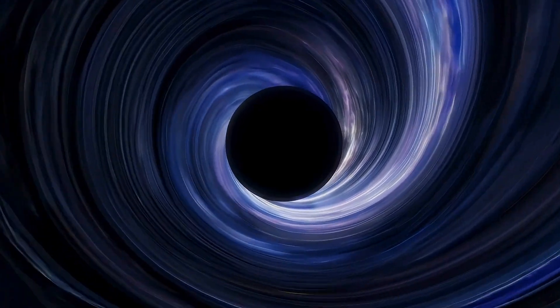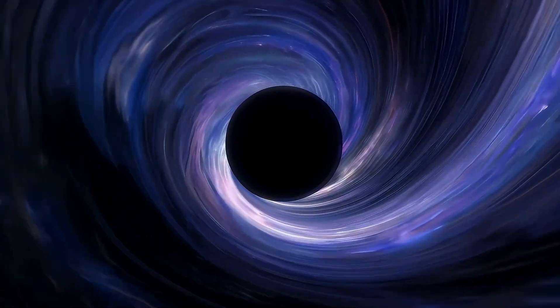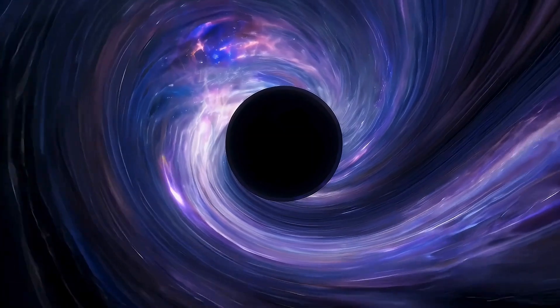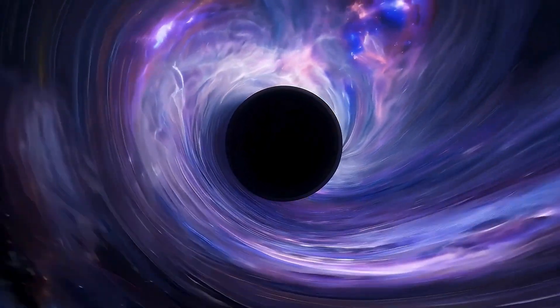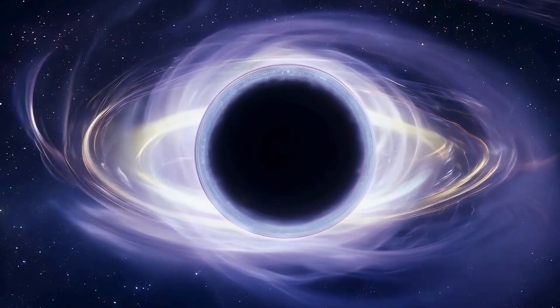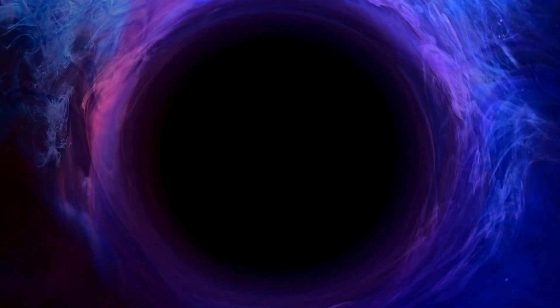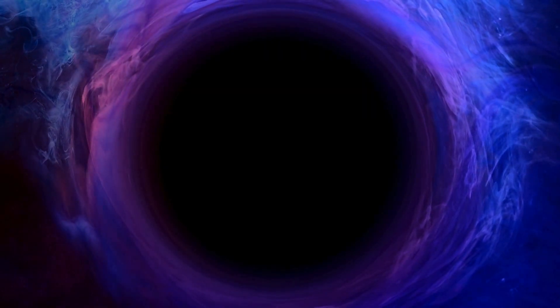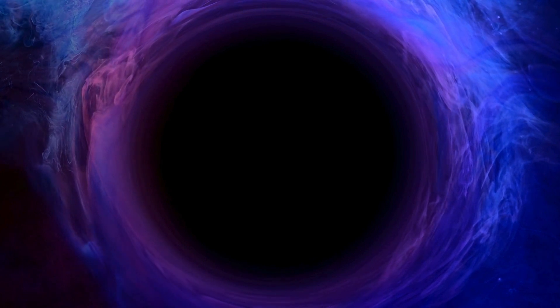One of these is gravitational lensing. Gravitational lensing is a phenomenon predicted by Albert Einstein's theory of general relativity. According to this theory, massive objects like black holes bend the fabric of space-time around them. When light from a distant object passes near a massive body, the path of the light is bent, resulting in a visual distortion or magnification of the object's image.